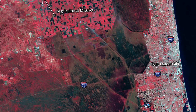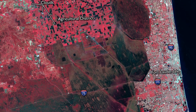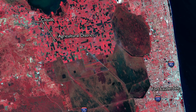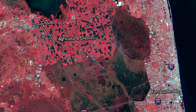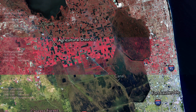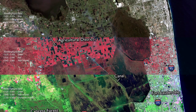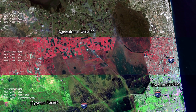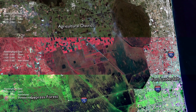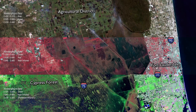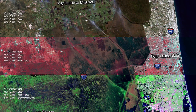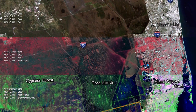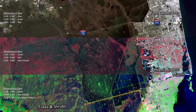You can easily distinguish the healthy agriculture more clearly than you can in the true color image. Here, you can look at the three different depictions of the multispectral data we used to create these images, and you can see how the surface cover appears different with some features enhanced in the different depictions.